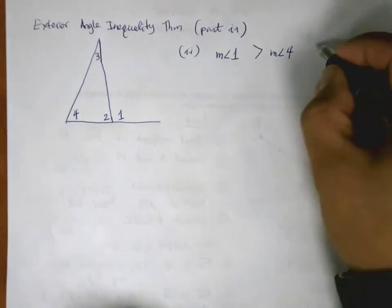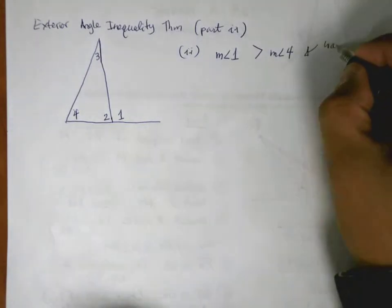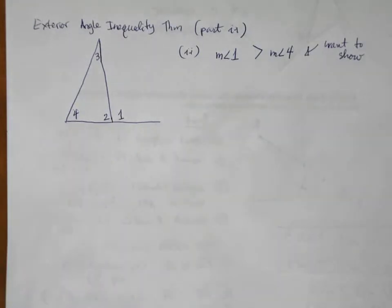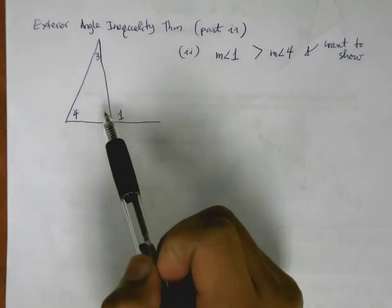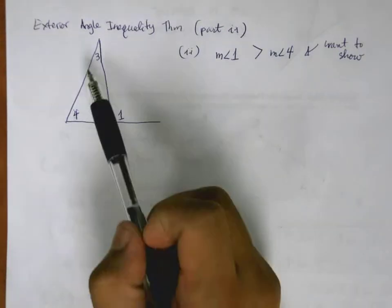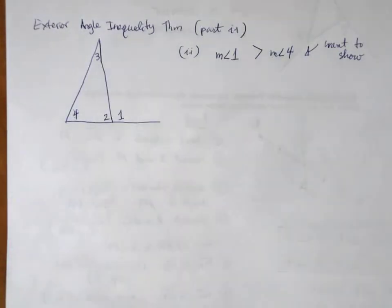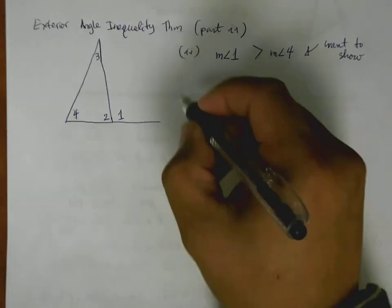So this is what we want to show. The way that we're going to go about this is very similar to what we did in part 1. But notice here angle 4 is down here. It isn't up here, so we can't quite do the same trick that we did before. This is a new method.